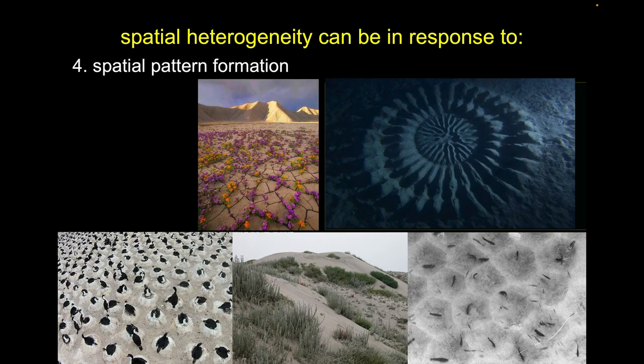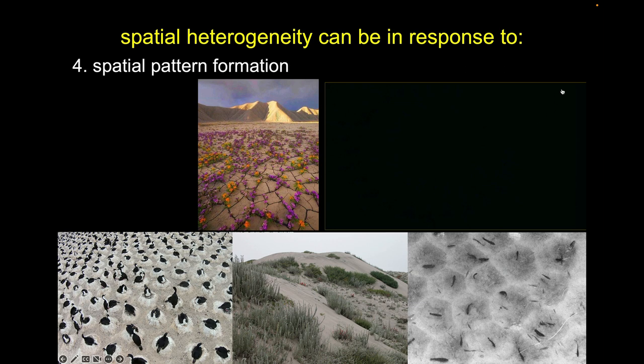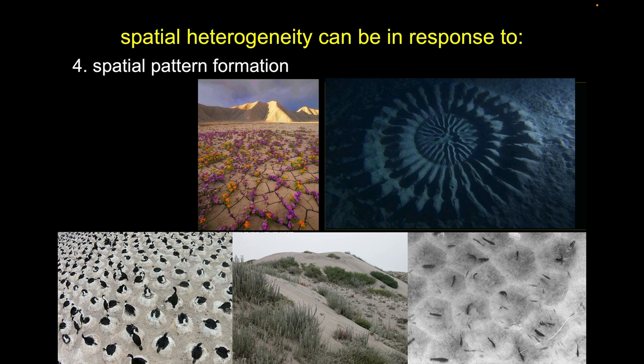We can also get spatial heterogeneity as a consequence of biological interactions — created from behaviors in various ecological settings. These seabirds can't just nest anywhere; they want to nest on offshore islands, but don't want to be right next to another nesting pair because of potential competition and conflict. There's an optimal spacing distance, and this very regular spacing of seabird nests is a consequence of that biology.